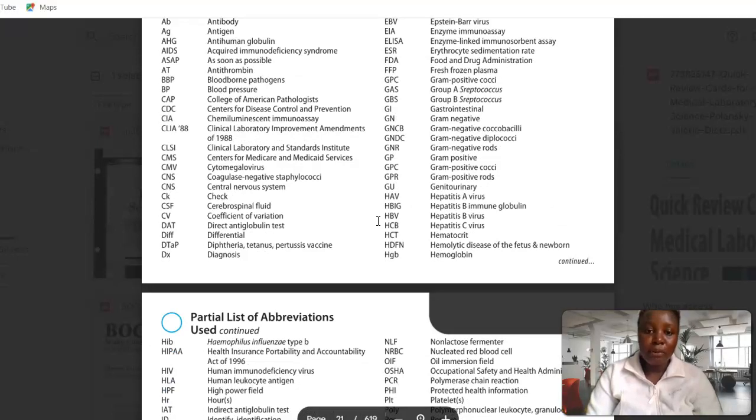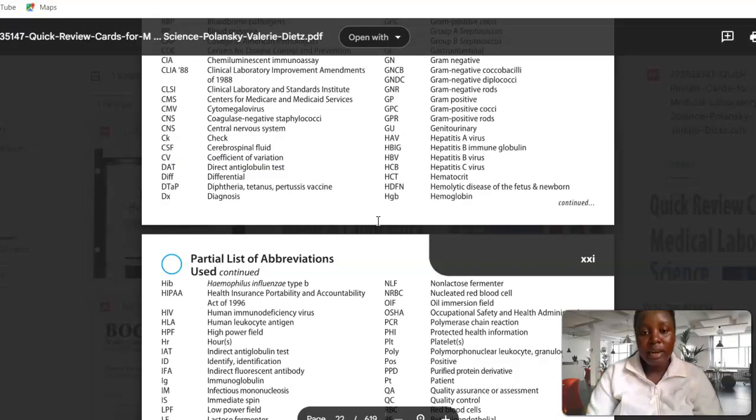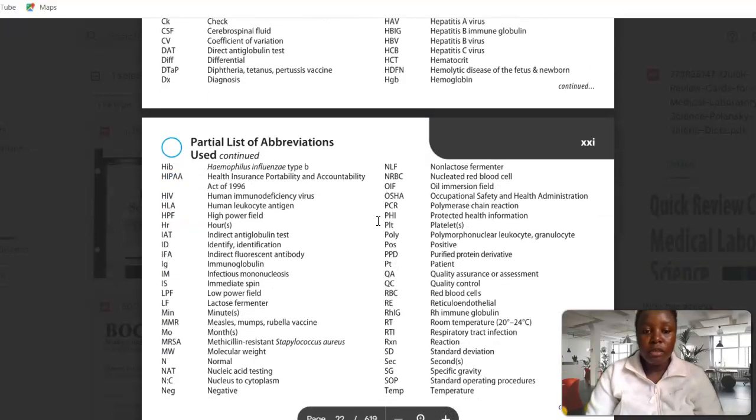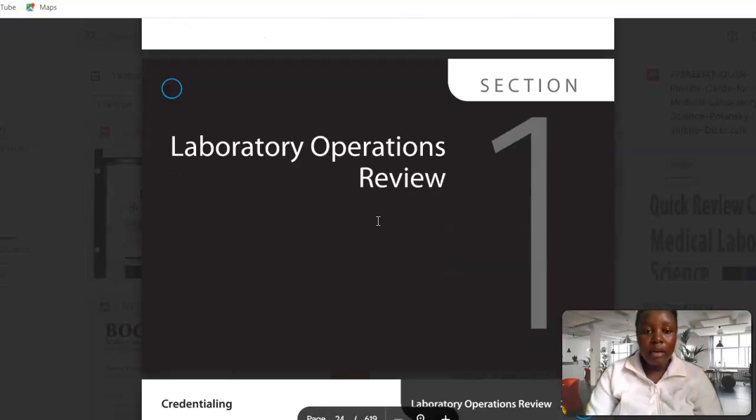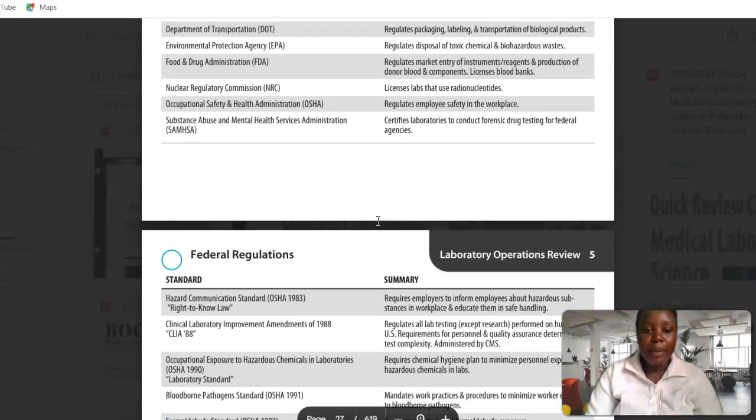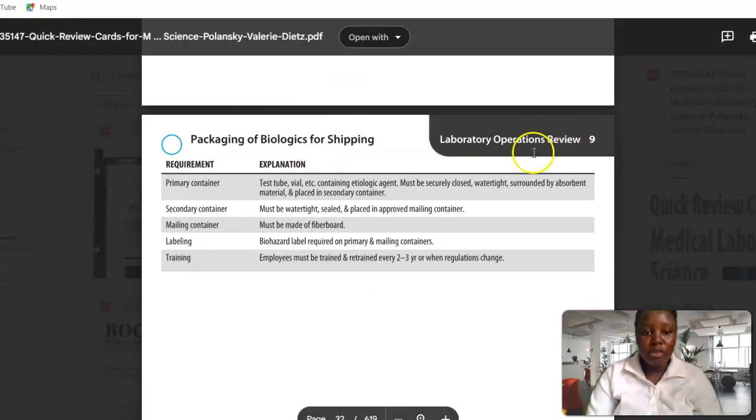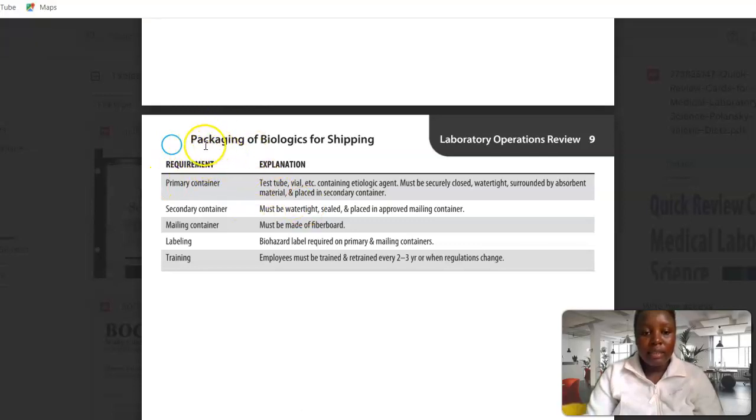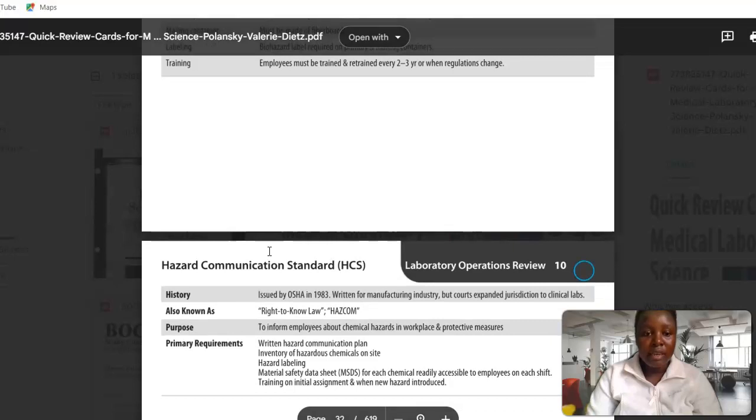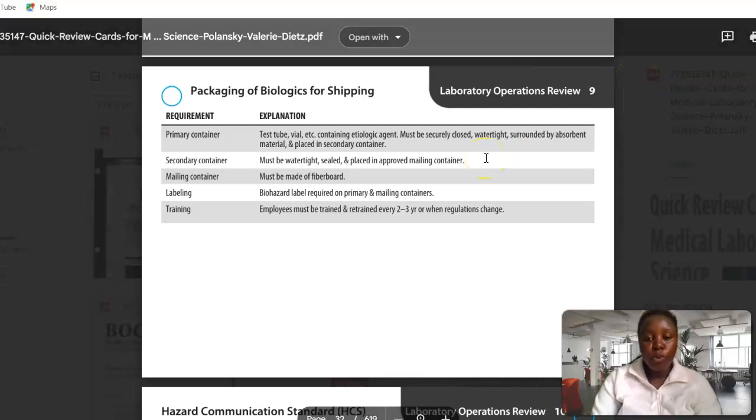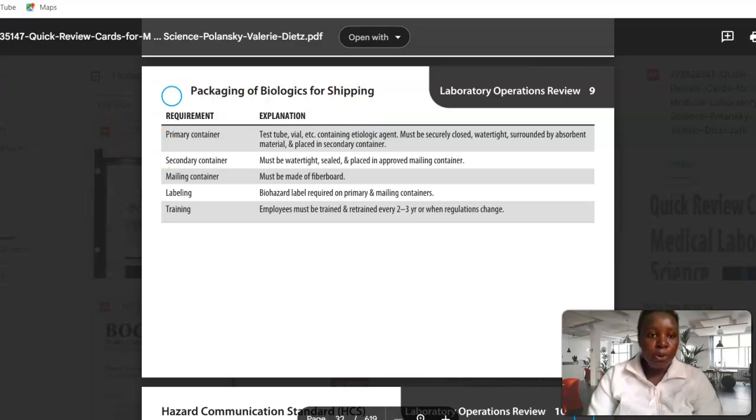I wouldn't advise you to focus on this book alone because it is too summarized, but it is a lifesaver especially when you are blank, like when you graduated 10 years ago and you don't remember. Maybe you've not been practicing in other fields or in other areas, probably microbiology or immunology, and you have forgotten most of the topics. This is a good start. It's a bit summarized and gives you an overview of all the subjects, like lab operations, packaging of biologics for shipping, types of containers, explanations, requirements and all that.